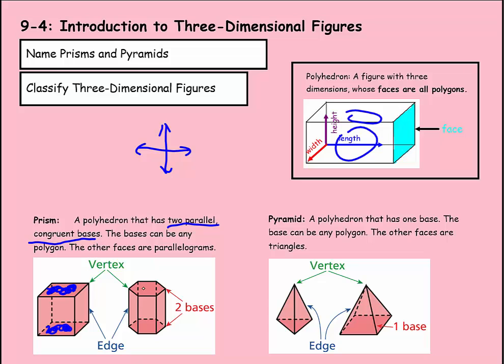This one also has two bases — the top and the bottom in this case. They are parallel, they are congruent, making it a prism. And then it has parallelograms or rectangles for its faces.